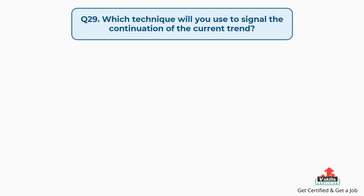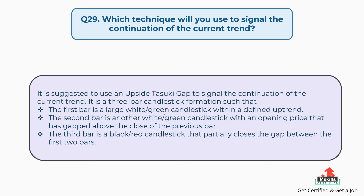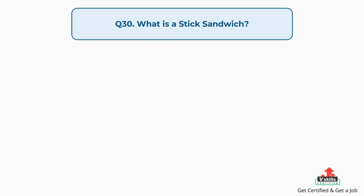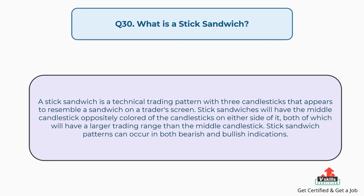Question number 29: Which technique will you use to signal the continuation of the current trend? It is suggested to use an upside Tasuki gap to signal the continuation of the current trend. It is a three-bar candlestick formation such that the first bar is a large white or green candlestick within a defined uptrend; the second bar is another white or green candlestick with an opening price that has gapped above the close of the previous bar; and the third bar is a black or red candlestick that partially closes the gap between the first two bars.